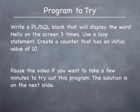On this slide is a program for you to try. You may pause the video for a few minutes and attempt the program which is to write a PL/SQL block that will display the word hello on the screen three times. You are expected to use a while loop construct. There is a slight difference between this program and the one I explained on the previous slide. Here you are expected to set the variable that will behave as a counter to an initial value of 10. Think of what you must do to ensure that with an initial value of 10 the program displays the word hello three times.